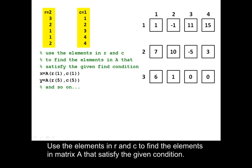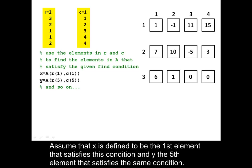Use the elements in R and C to find the elements in matrix A that satisfy the given condition. Assume that X is defined to be the first element that satisfies this condition and Y the fifth element that satisfies the same condition.